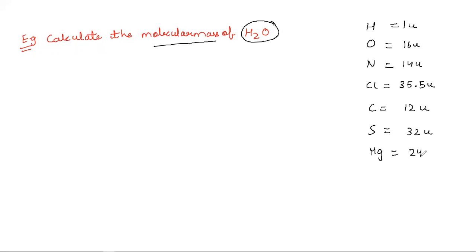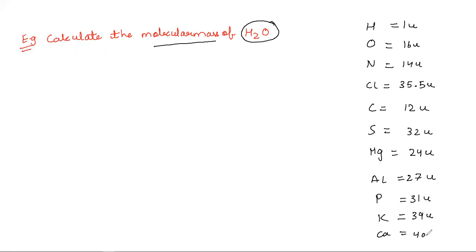Magnesium is 24u, so you should remember the atomic mass of these elements. Phosphorus is 31u, potassium is 39u, calcium is 40u, iron is 56u, copper is 63u. These are the common elements that we use in day-to-day life, and you should know their atomic masses.